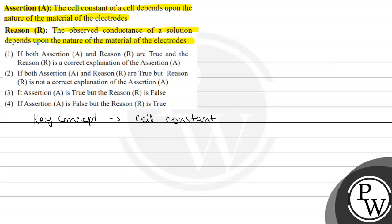So let us see what cell constant is. Basically, cell constant is of a conductivity cell. So we can write cell constant of a conductivity cell.